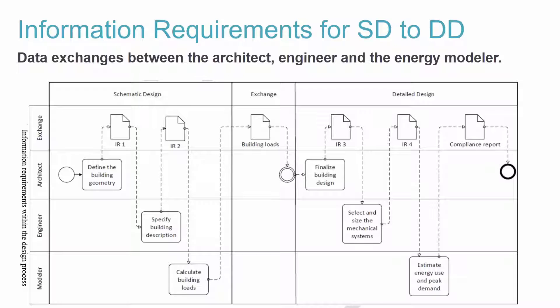In theory, the whole point of BIM is that the architect defines the building geometry — it shouldn't be up to the modeler to rebuild an exact duplicate for the energy model. If we can get the architect engaged early to define this geometry, they can pass it to the engineer to specify the building description and performance, who then passes it to the modeler. We produce the loads and share that information back into the BIM process.